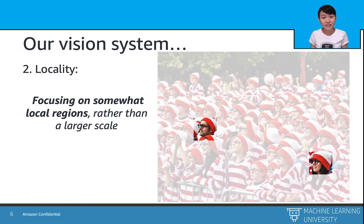And second is locality, which means our vision system focuses on somewhat local regions during detection, but not something further from it. And in this example, it means we don't need to include the trees during the Waldo detection.